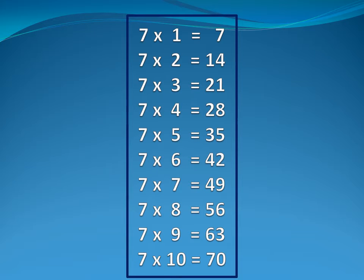Seven six is forty-two. Seven seven is forty-nine. Seven eight is fifty-six. Seven nine is sixty-three. Seven ten is seventy.